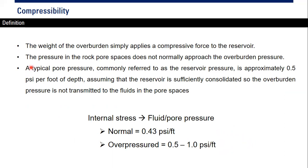The weight of the overburden applies a compressive force to the reservoir. The overburden pressure will compress the rock. The pressure in the rock pore spaces does not normally approach the overburden pressure. A typical pore pressure, commonly referred to as reservoir pressure, is approximately 0.5 psi per foot of depth, assuming that the reservoir is sufficiently consolidated so that the overburden pressure is not transmitted to the fluids in the pore spaces.